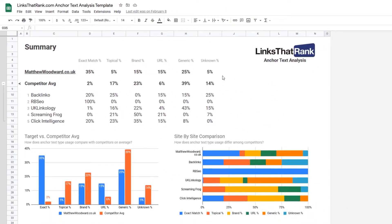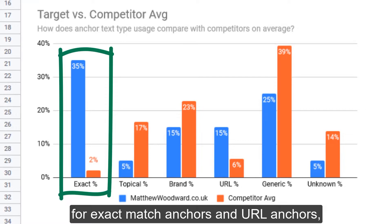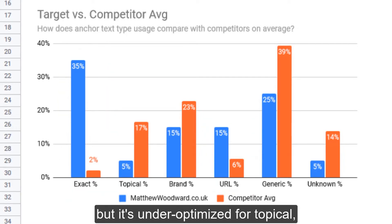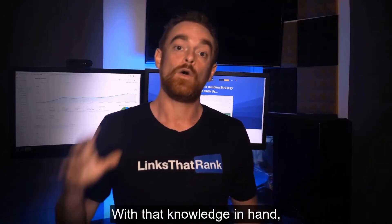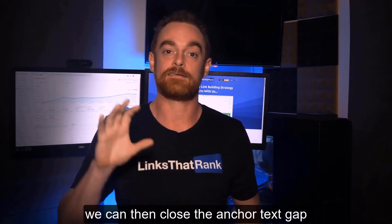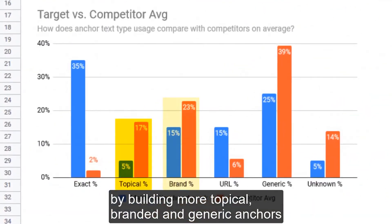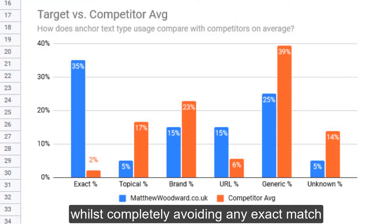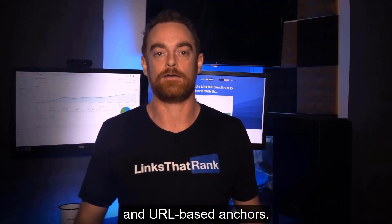In this example, we can see that my page is heavily over-optimized for exact match anchors and URL anchors, but it's under-optimized for topical, brand, and generic anchors. With that knowledge in hand, we can then close the anchor text gap by building more topical, branded, and generic anchors whilst completely avoiding any exact match and URL-based anchors.